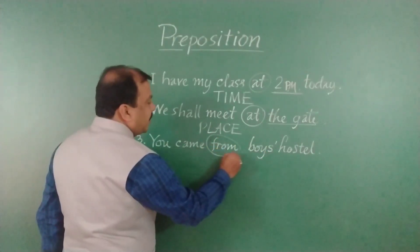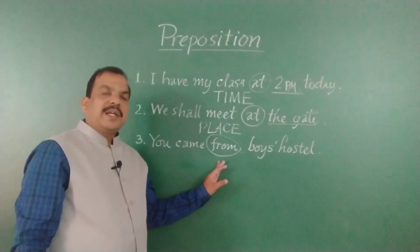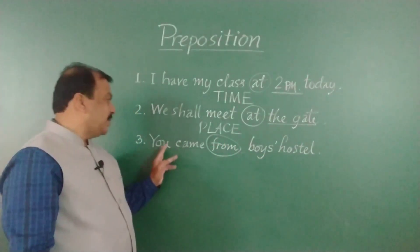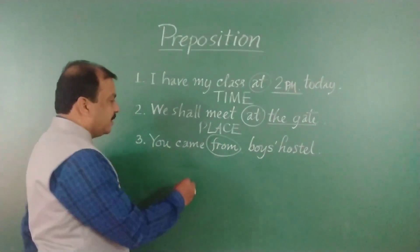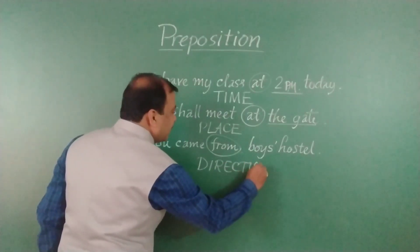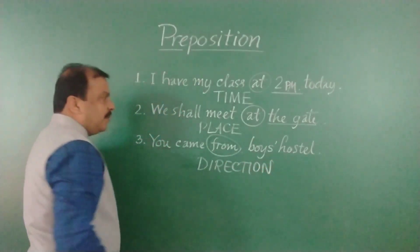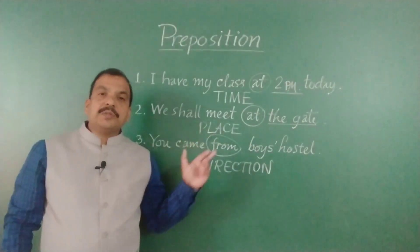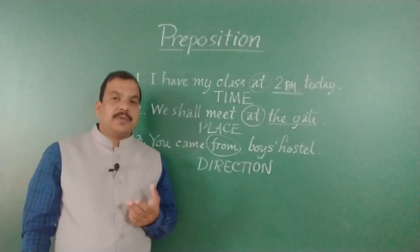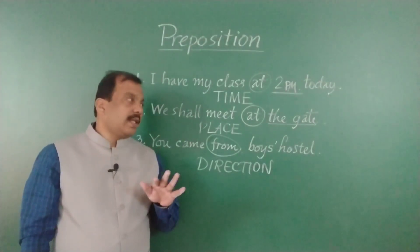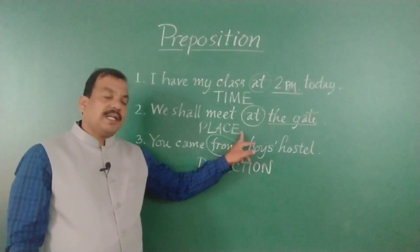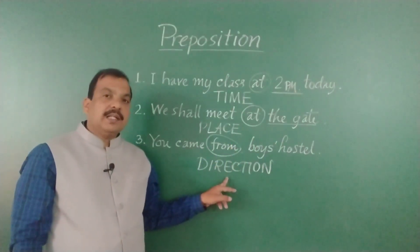In sentence number three: 'You came from boys' hostel.' By using the word 'from,' we talked about the direction. So when we use prepositions we must know why: basically there are three functions — one is time, the second is place, and the third is direction.